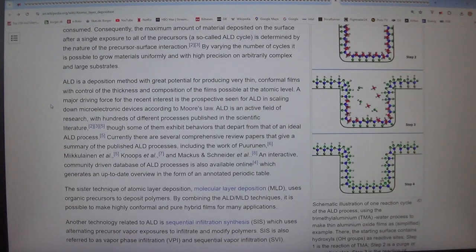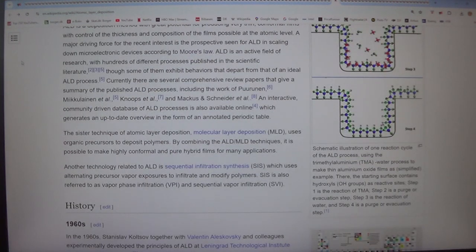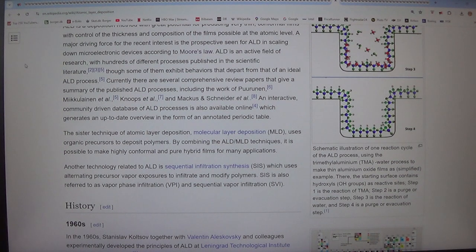Consequently, the maximum amount of material deposited on the surface after a single exposure to all of the precursors, a so-called ALD cycle, is determined by the nature of the precursor surface interaction. By varying the number of cycles it is possible to grow materials uniformly and with high precision on arbitrarily complex and large substrates. ALD is a deposition method with great potential for producing very thin, conformal films with control of the thickness and composition of the films possible at the atomic level.